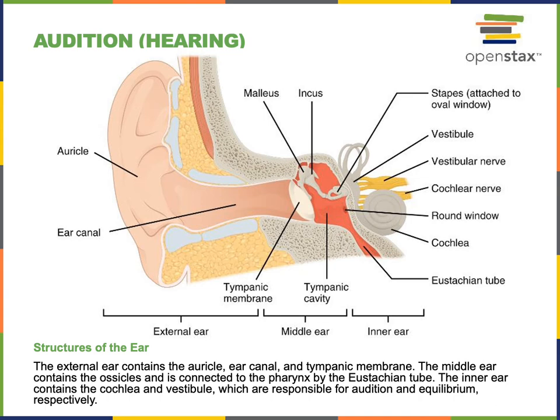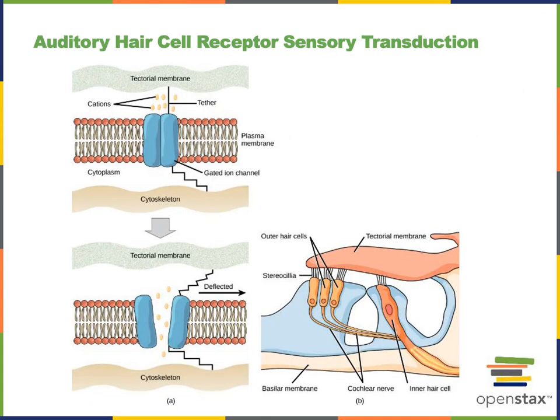These pressure waves in the fluid of the inner ear will cause vibration in the basilar membrane of the inner ear. The mechanical properties of the basilar membrane change along its length so that different regions of the basilar membrane vibrate according to the frequency of the sound.